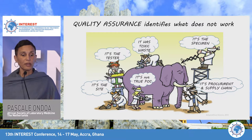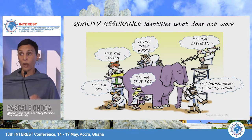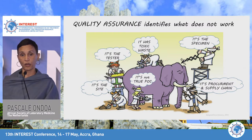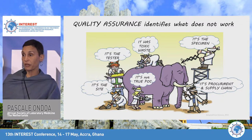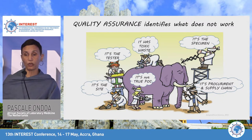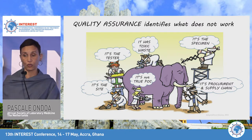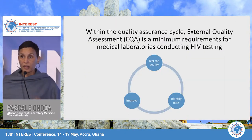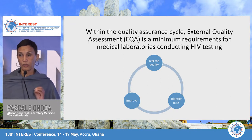What does quality assurance really try to identify? It tries to identify what in your system doesn't work when you are testing — is it the specimen, the tester, the laboratory, or the supply chain? That's what quality assurance is supposed to do: answer those questions.